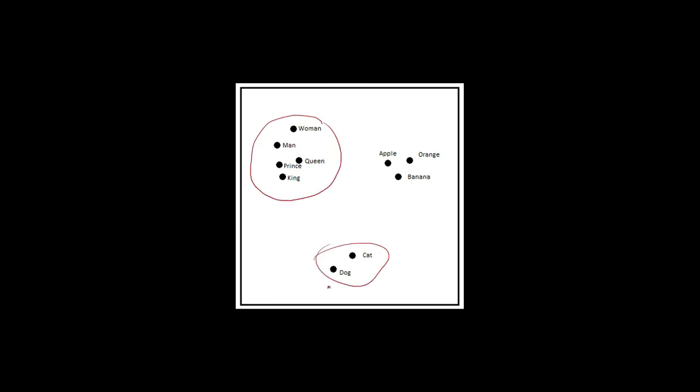If you project these vectors into a two-dimensional plane, then you might see something like this. You can see that certain words are clustered in one region, while words that are animals are clustered in another region, and words that are fruits are clustered in yet another region. This means that similar words are related and closer to each other.